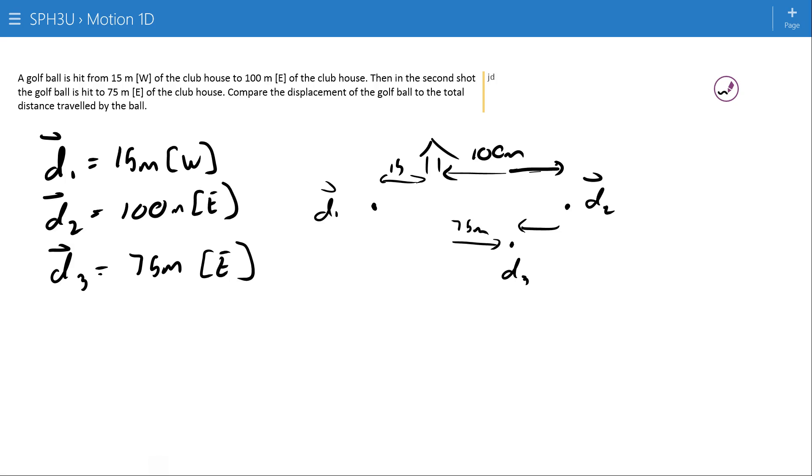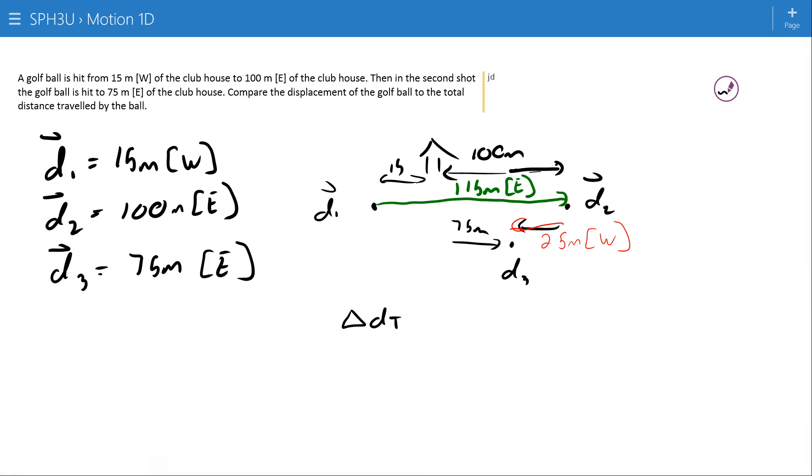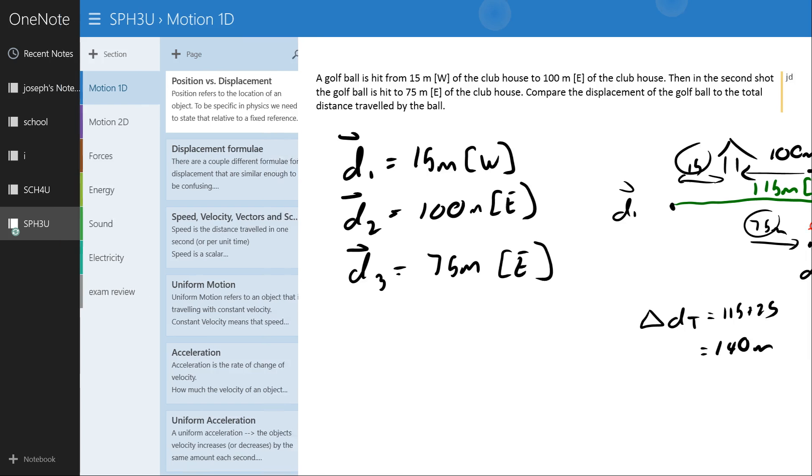Now I think based on this we can just look at this diagram and solve all these problems very easily. In the first situation it traveled 115 meters east. And then in the second situation it went back. It was 100 meters east and now it's only 75 meters east so that must have been 25 meters west. The total distance traveled is going to be 115 plus 25 or 140 meters. And we can come up with the total displacement as 90 meters east of where you started.